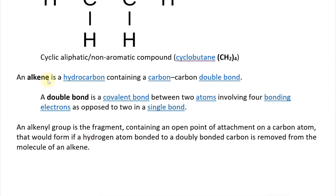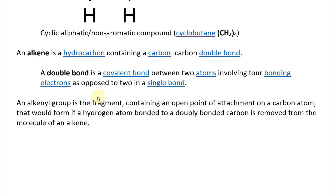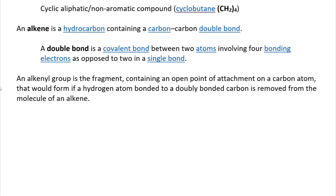An alkene is a hydrocarbon containing a carbon-carbon double bond. A double bond is a covalent bond between two atoms involving four bonding electrons, as opposed to two in a single bond. So as opposed to a single bond of two electrons, a double bond has four electrons or two covalent bonds.